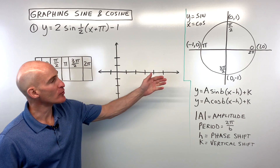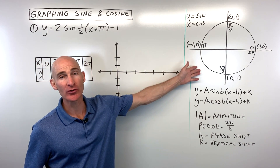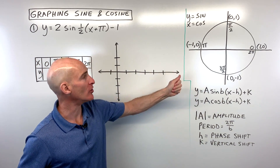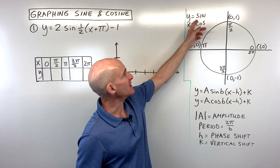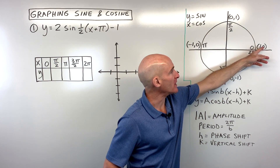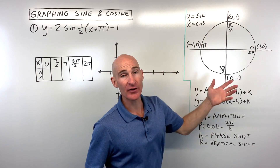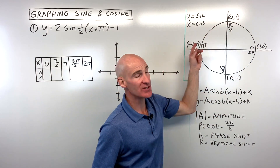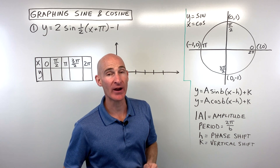You learned previously about the unit circle — if you need to refresh, check out my videos on the unit circle. We know on the unit circle that the sine value is the y-coordinate of each of these points, and the cosine is going to be the x-coordinate of each of these points at each of the different angles.